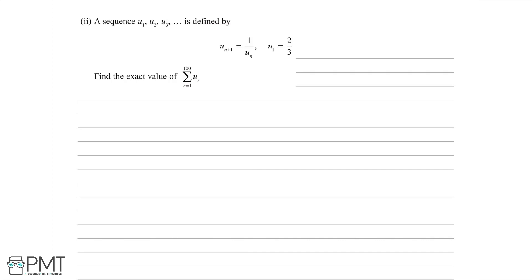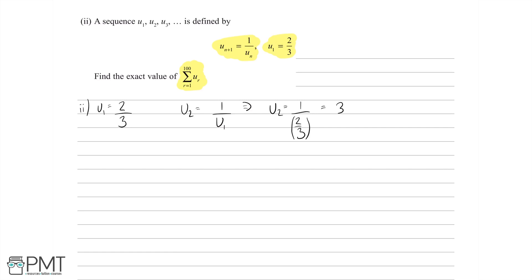The sequence u1, u2, u3 is defined by u(n+1) equals 1 over u_n, and the first term u1 is 2/3. We need to find the exact value of the sum of the first 100 terms. Let's write out the first few terms. u1 is 2/3, and u2 is 1 over u1 — since u(n+1) equals 1 over u_n — which means u2 is 1 over (2/3), which equals 3/2.